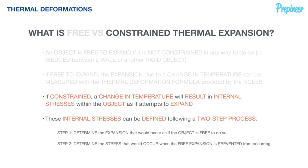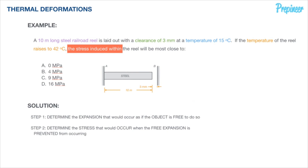Taking this back to our problem statement, our first step is to determine the expansion that would occur if the object were free. If we determine that the expansion of the steel railroad reel is less than three millimeters, there's no need to move to step two because no stress will be induced. However, if the free expansion is greater than the clearance of three millimeters, then there will be stress induced in the reel.